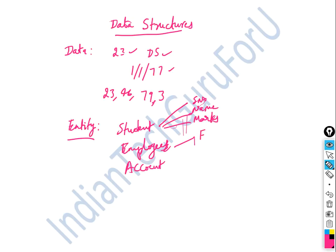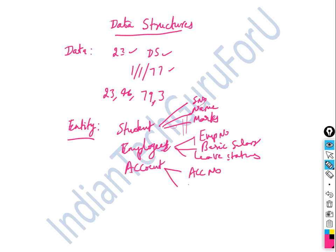For example, an employee entity has attributes such as employee number, basic salary, and leave status. A bank account entity has attributes such as account number, branch name, and account holder name.